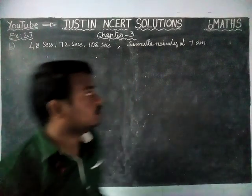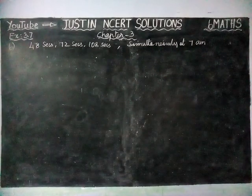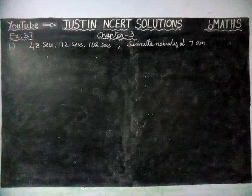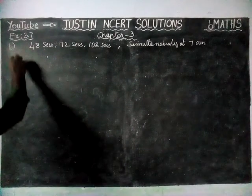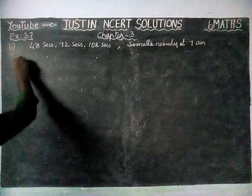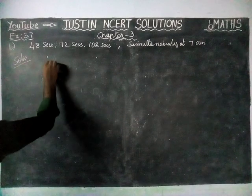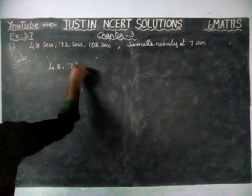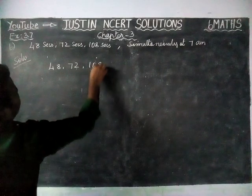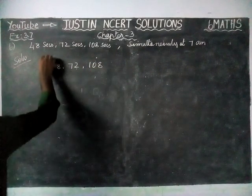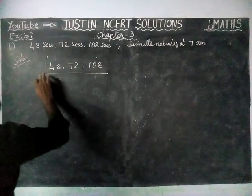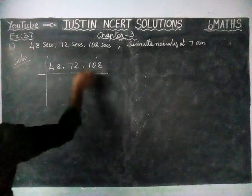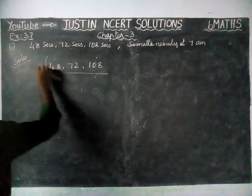We have to underline the word 'simultaneously'. We have to find the LCM for the given numbers. First we are going to find the solution for 48, 72, and 108. We are going to divide them. Here the last digits are 8, 2, and 8, so we can divide by 2.